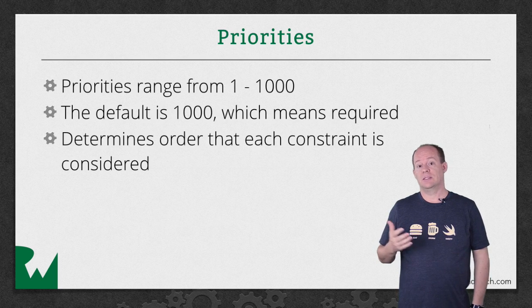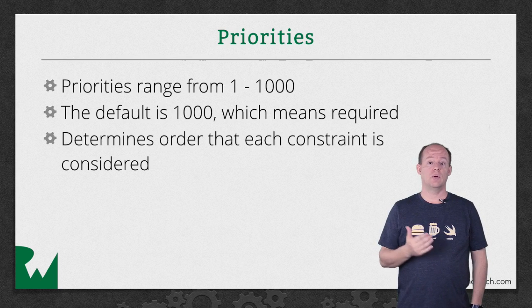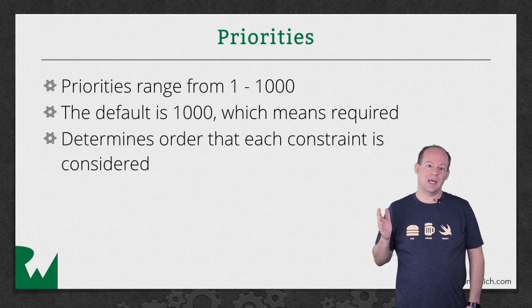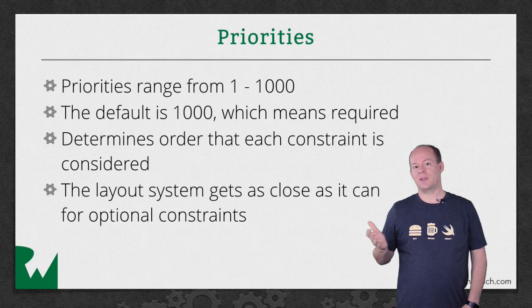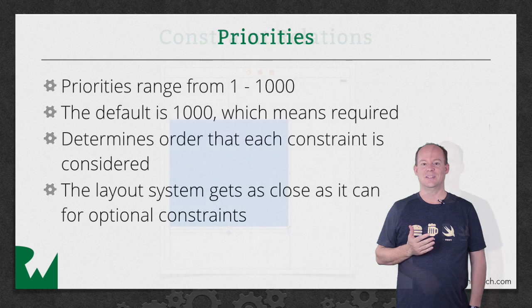But if Auto Layout can't satisfy a constraint with a priority lower than 1,000, it doesn't discard that constraint. It tries to get as close as it can, sort of like your sibling on a road trip when you were kids.